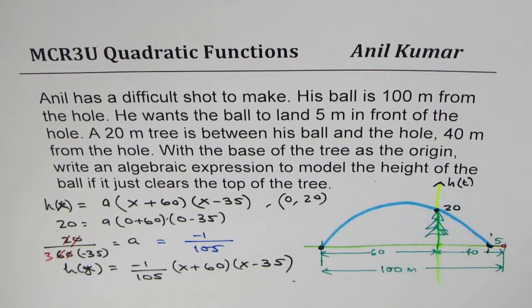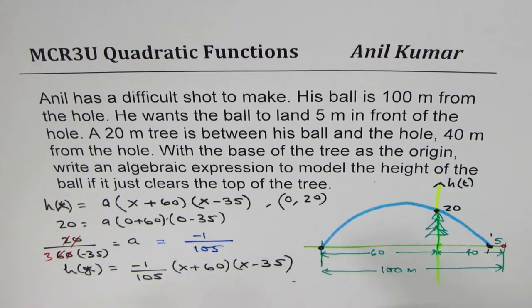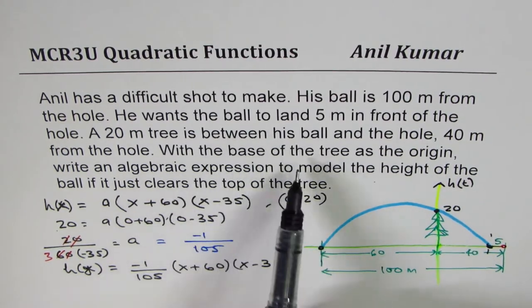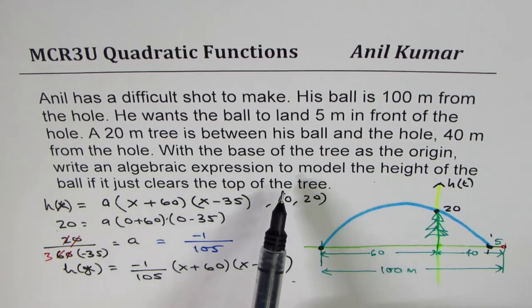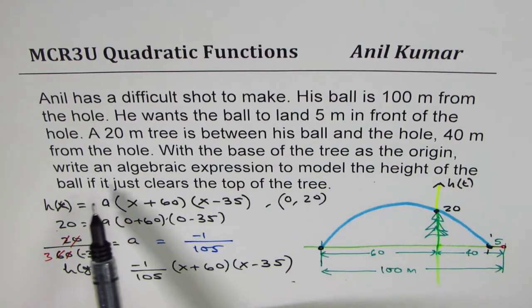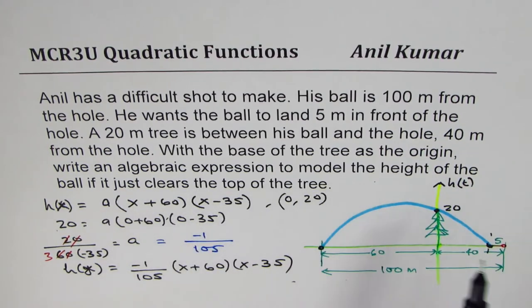So with this, we could actually write down our equation. So let's read the question once again. With the base of the tree as origin, write an algebraic expression to model the height of the ball if it just clears the top of the tree.